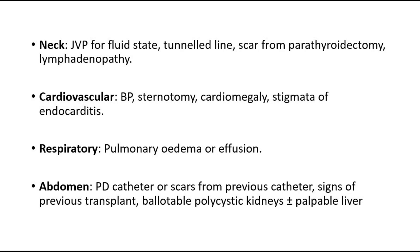Look for scars from parathyroidectomy and lymphadenopathy. For cardiovascular examination, check the blood pressure, look for any previous scar, and look for signs of cardiomegaly like displaced apex beat. For respiratory, look for pulmonary edema or effusion. For the abdomen, look for any PD catheter or scars from previous catheters — small scars just below the umbilicus and to the side of the midline — and also look for signs of previous transplant. On abdominal examination, we have to ballot the kidneys, as one expected finding is ballotable polycystic kidney that could have caused renal failure.